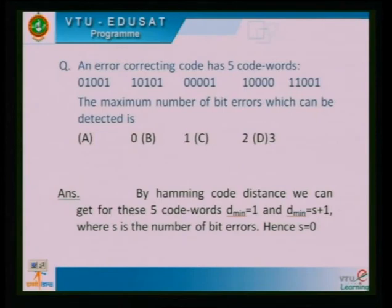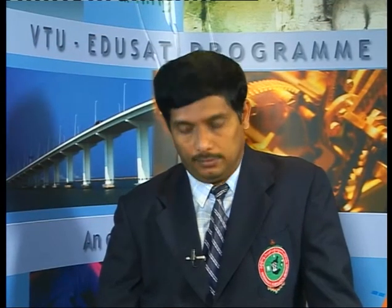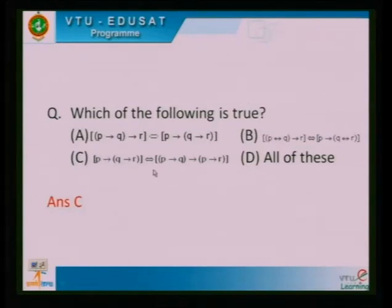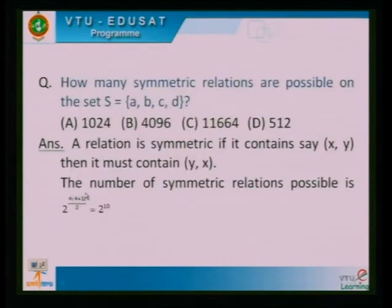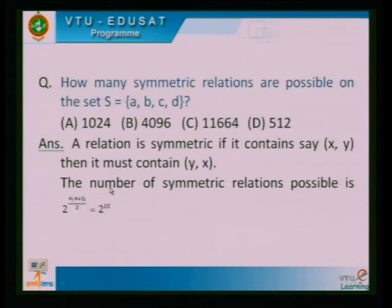These are some multiple-choice problems useful for examination purposes. While rolling an unbiased die, determine the expectation of its face value. The expectation is the sum: 1×(1/6) + 2×(1/6) + ... + 6×(1/6) = 7/2. How many symmetric relations are possible on the set S = {A, B, C, D}? The number is 2^(n(n+1)/2) = 2^10 for n = 4.